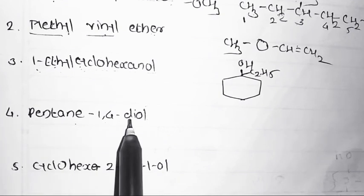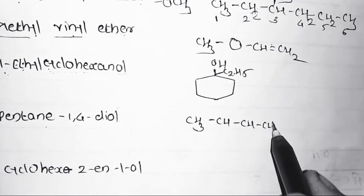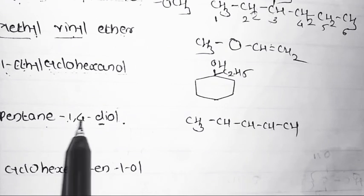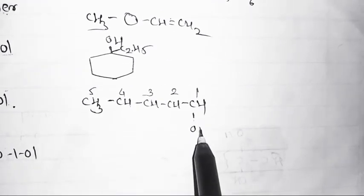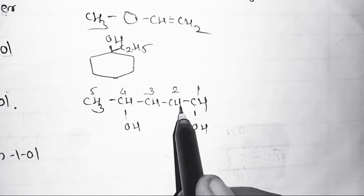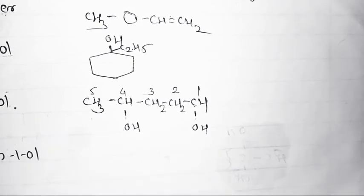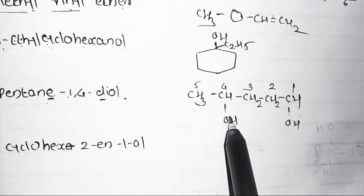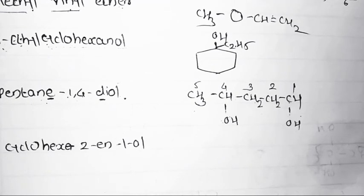Fourth example: pentane-1,4-diol. Parent chain is pentane with 5 carbons. Diol means two OH groups attached at positions 1 and 4. Numbering: 1, 2, 3, 4, 5 — OH groups at carbons 1 and 4. Structural formula: HO-CH2-CH2-CH2-CH(OH)-CH3. In nomenclature, the 'e' in pentane remains as pentane-1,4-diol because two OH groups are present.